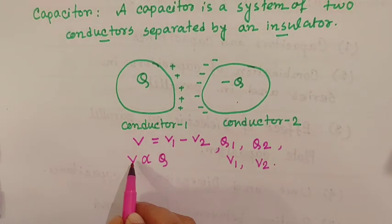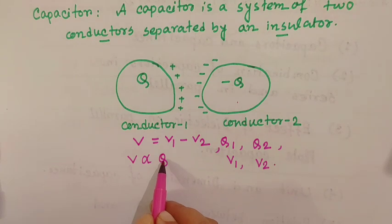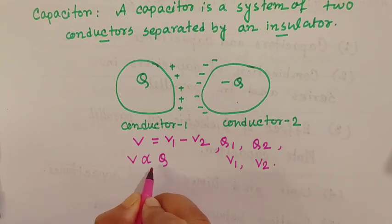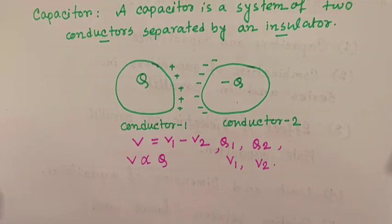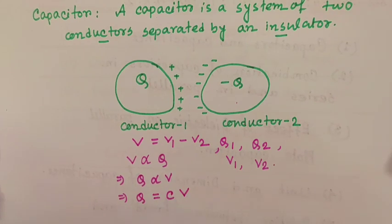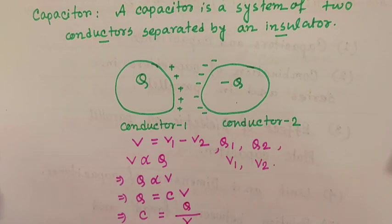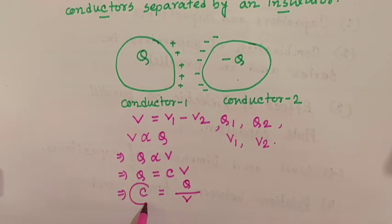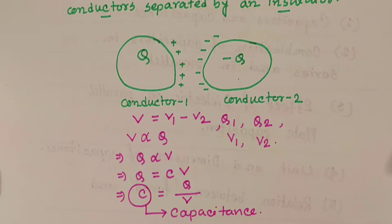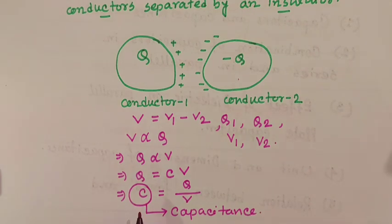That means this potential difference is also proportional to charge. From here we can write Q by V equals a constant. Since V is proportional to Q, Q equals constant times V. This constant C equals Q divided by V. This constant is known as capacitance. The constant C is called capacitance of the capacitor.